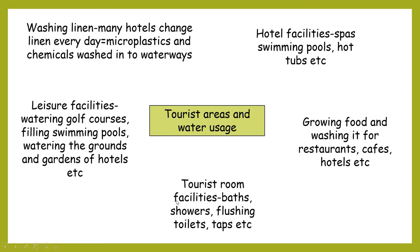In the rooms themselves — baths, showers, flushing toilets, taps — in a couple of square kilometres, you could have hundreds or even thousands of rooms if you've got a few multi-storey hotels, with families and couples staying in them, and that means an awful lot of water being used. On average, it's about three to four litres every time you flush the toilet, so that's an awful lot of water being wasted.